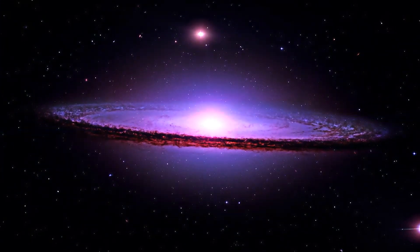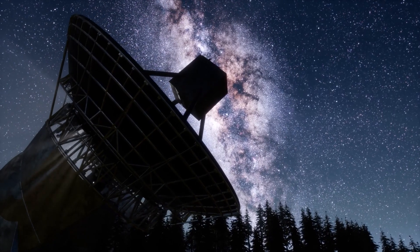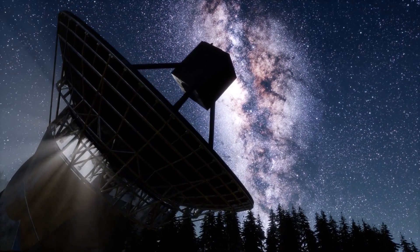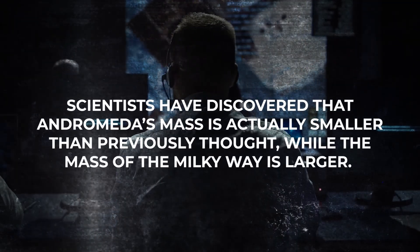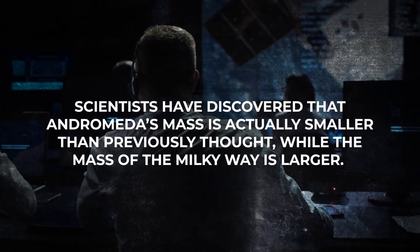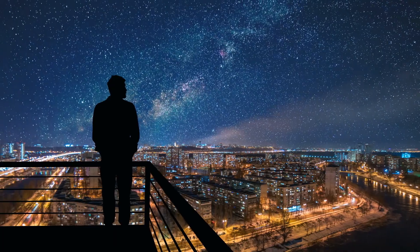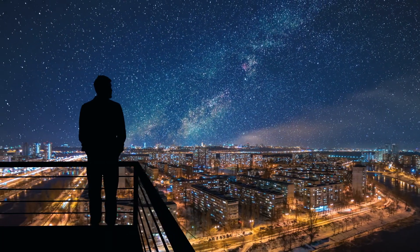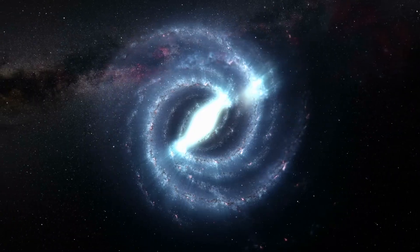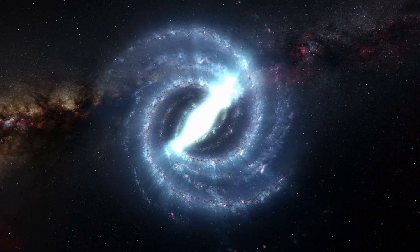However, further research has shown that they are more comparable in size. Recent research has completely changed our understanding of the Andromeda galaxy and its relationship with our own Milky Way. Scientists have discovered that Andromeda's mass is actually smaller than previously thought, while the mass of the Milky Way is larger. This means that if you were on Andromeda and looked at Earth, you would see a galaxy of similar size and mass to your own. It's mind-boggling to think about how colossal both the Milky Way and Andromeda truly are.